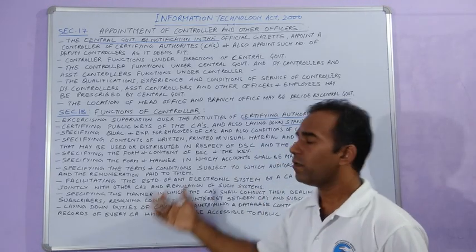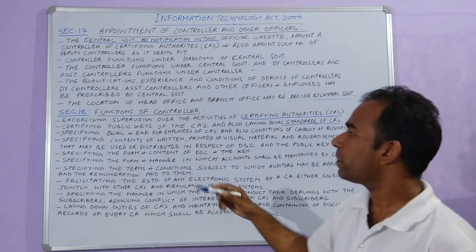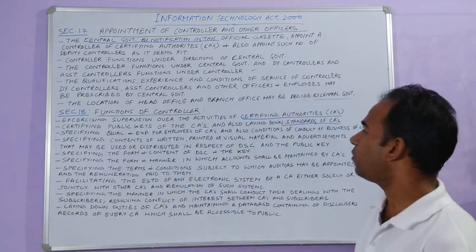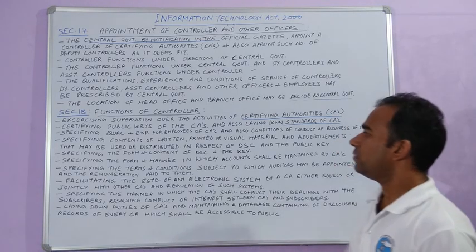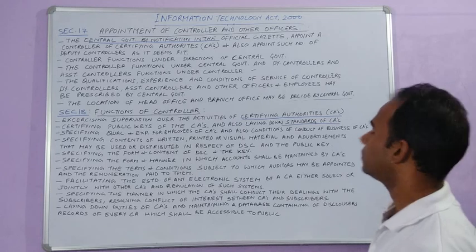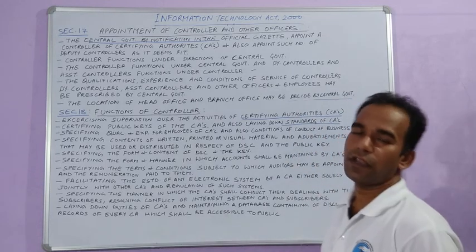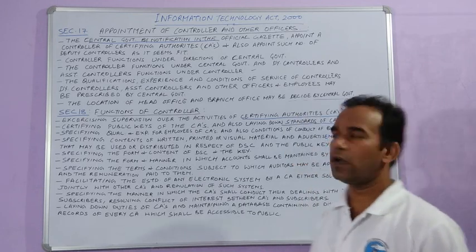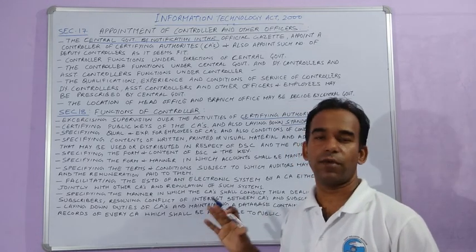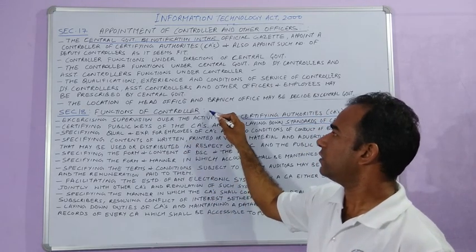The controller is responsible for specifying the qualifications and experience required for employees of certifying authorities, and also the conditions of conduct of business of certifying authorities — so who works under certifying authorities and what their qualifications and experience will be is decided by the controller.